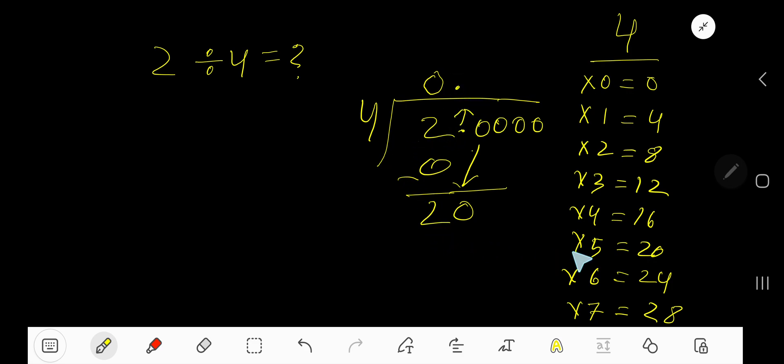4 goes into 20 how many times? 4 goes into 20 five times. 5 times 4, 20. And our remainder is 0. So 0.5 is our answer.